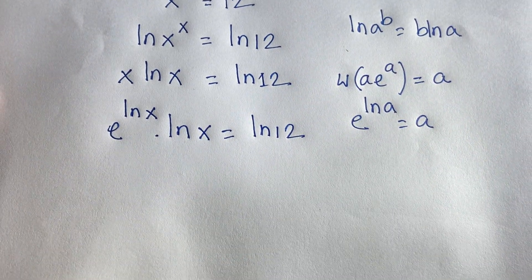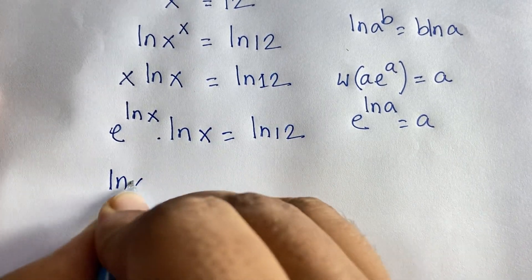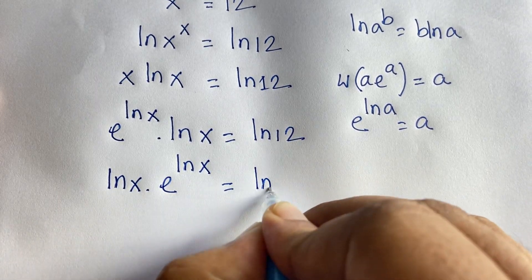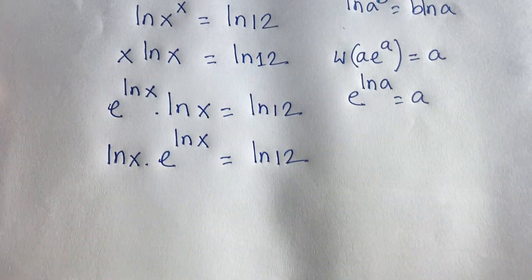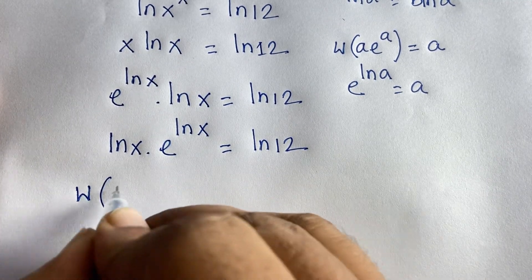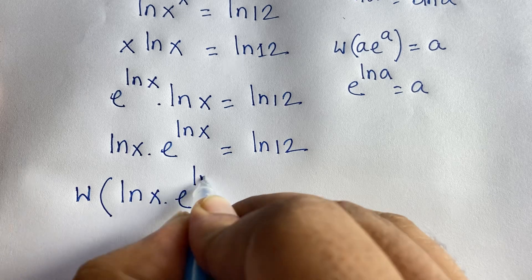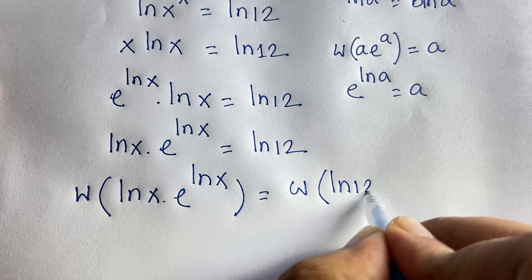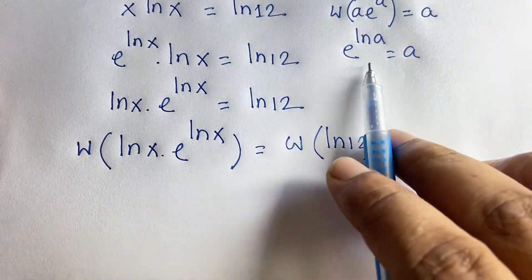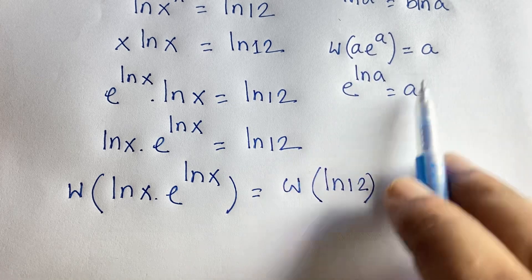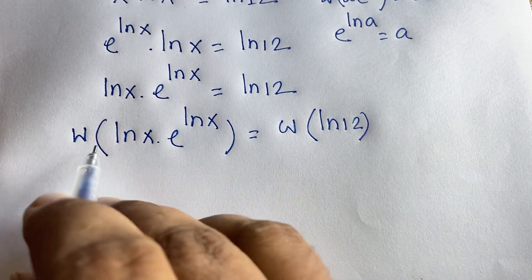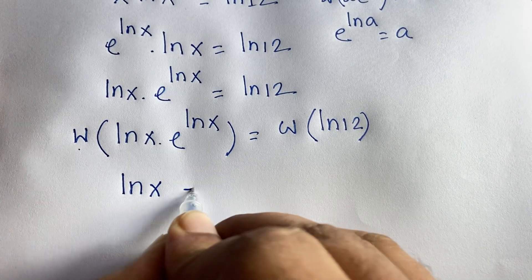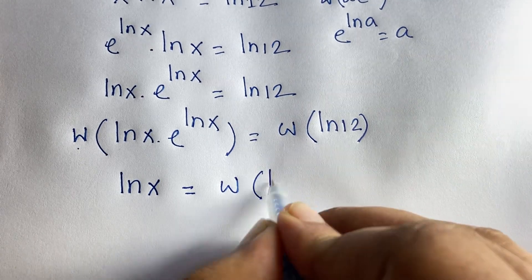Now I can see that ln(x) moves to the front, giving ln(x) · e^(ln x) = ln(12). Applying the Lambert W function to both sides: W(ln(x) · e^(ln x)) = W(ln(12)). Since W(a·e^a) = a, and here a = ln(x), we get ln(x) = W(ln(12)).